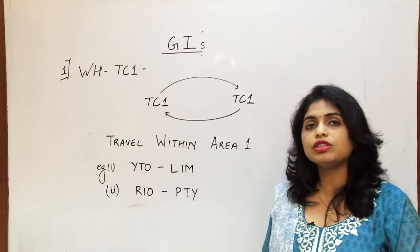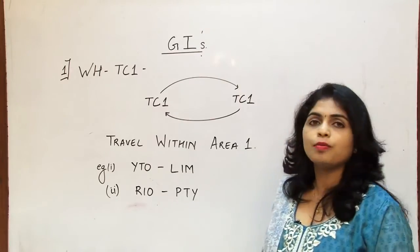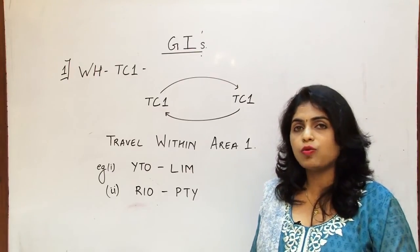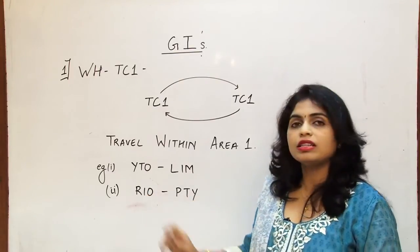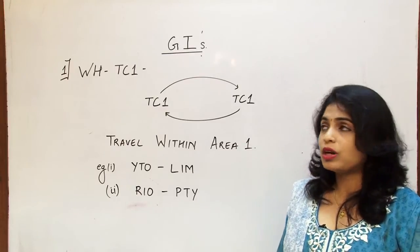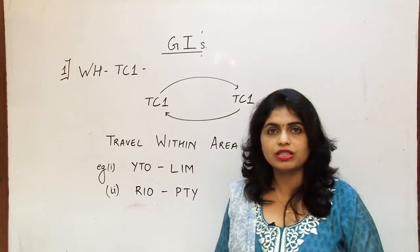The next example that we have is Rio, which is Rio de Janeiro, which is in Brazil, and Panama City, which is in Panama. Both of them are located in area one, so clearly the flight is roaming or travelling only within area one, so its global indicator will also be WH or Western Hemisphere.